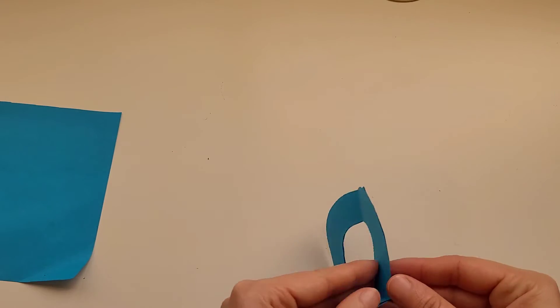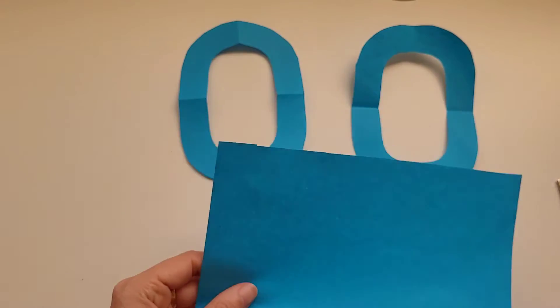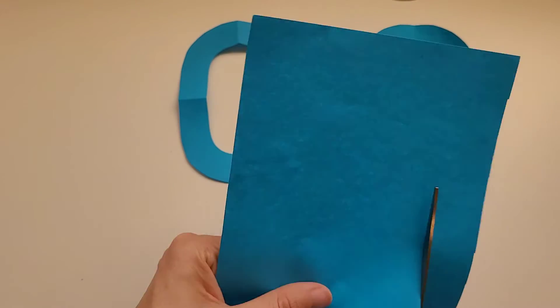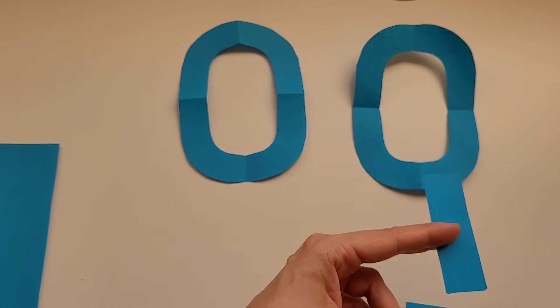By following the video, you can cut out a letter Q without needing a template. I'm going to start out by cutting a letter O and then I'm going to add on the strip to make it into a Q.